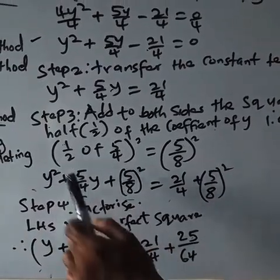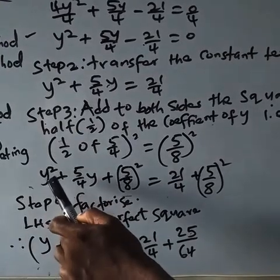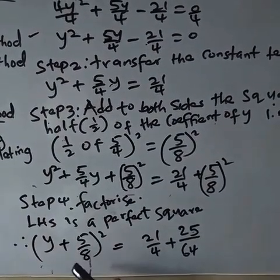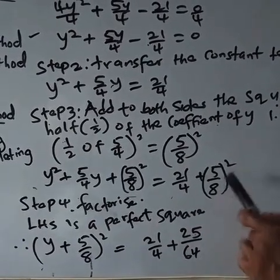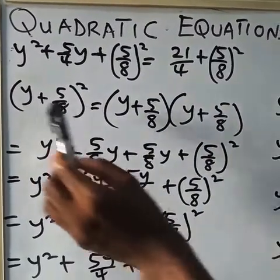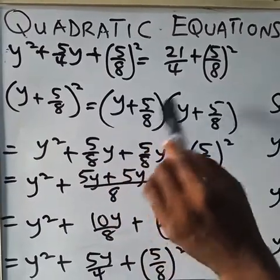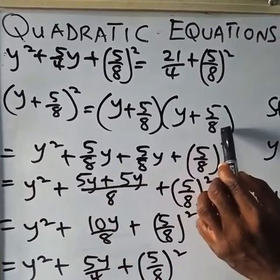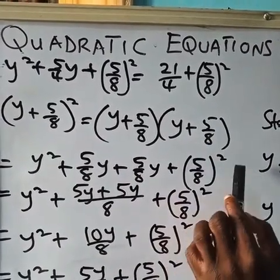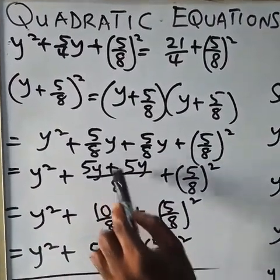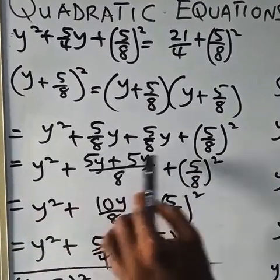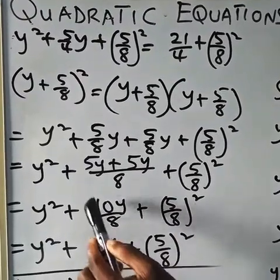If you look at this expression, you have a square here and a square here — this is a perfect square. By mental mathematics, you pick y and 5 over 8, giving y plus 5 over 8, all squared. To explain: (y + 5/8)² expands as y times y = y², y times 5/8 = 5y/8, plus 5/8 times y = 5y/8, plus (5/8)². Finding the LCM gives y squared plus 10y over 8 plus (5/8)², which simplifies to y squared plus 5y over 4 plus (5/8)² — matching our expression.